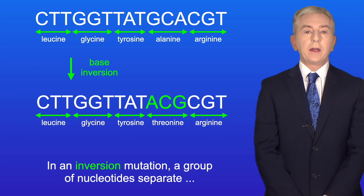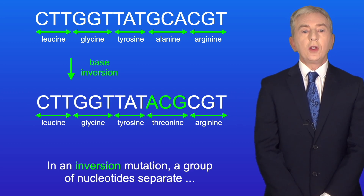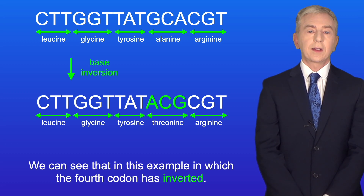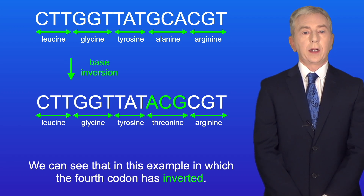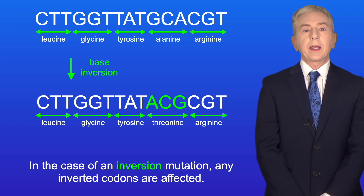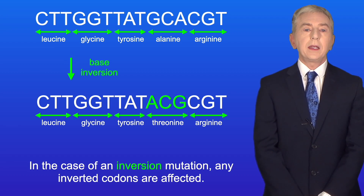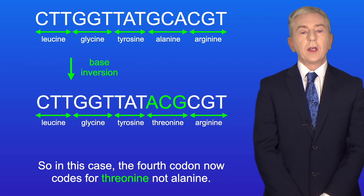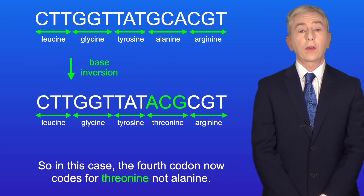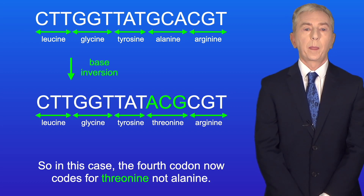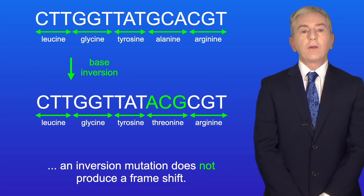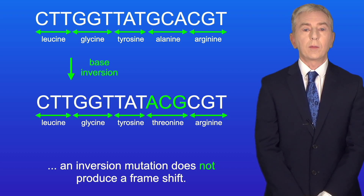Now in an inversion mutation, a group of nucleotides separate and then reattach in the same position but in a reverse order. We can see that in this example, in which the fourth codon has inverted. In the case of an inversion mutation, any inverted codons are affected — so in this case, the fourth codon now codes for threonine, not alanine. However, because the number of nucleotides has not changed, an inversion mutation does not produce a frame shift.